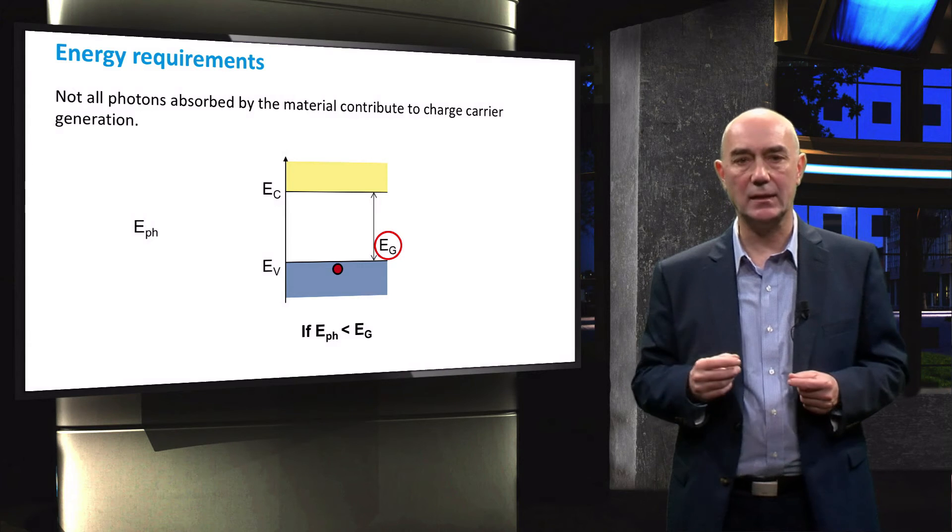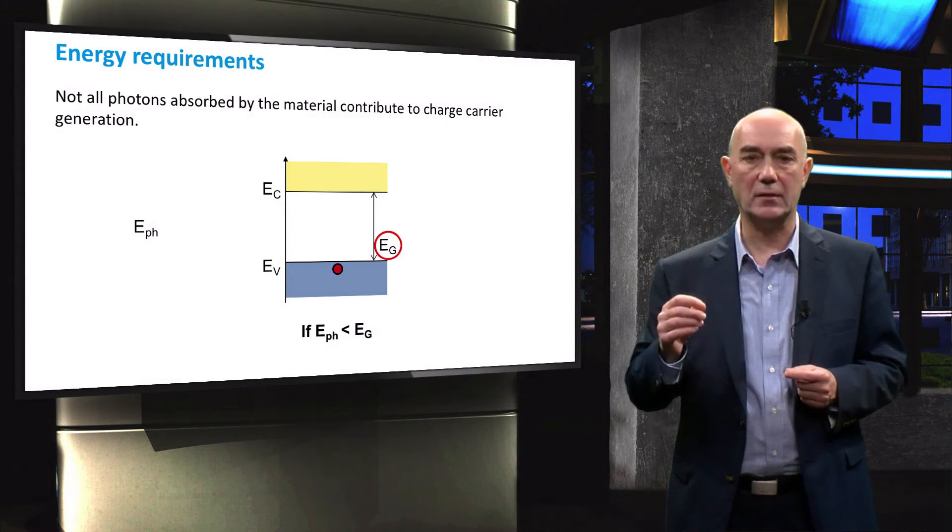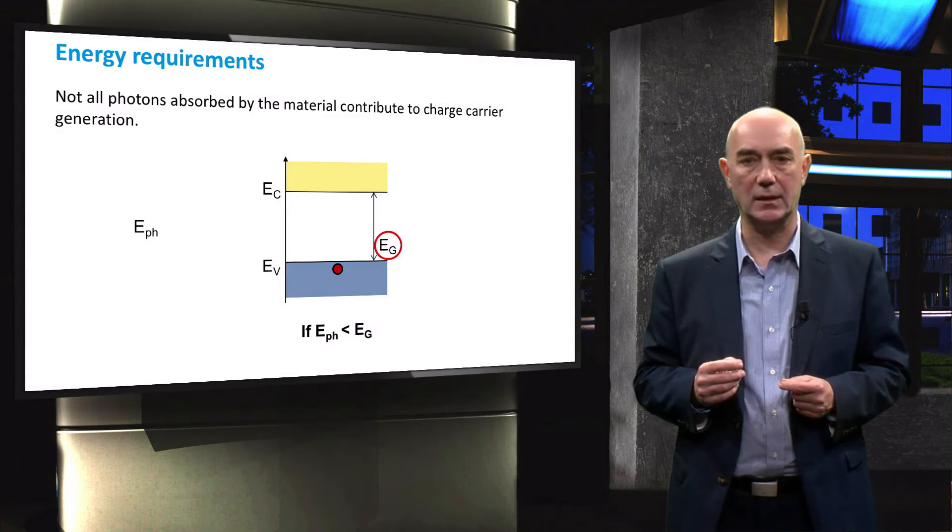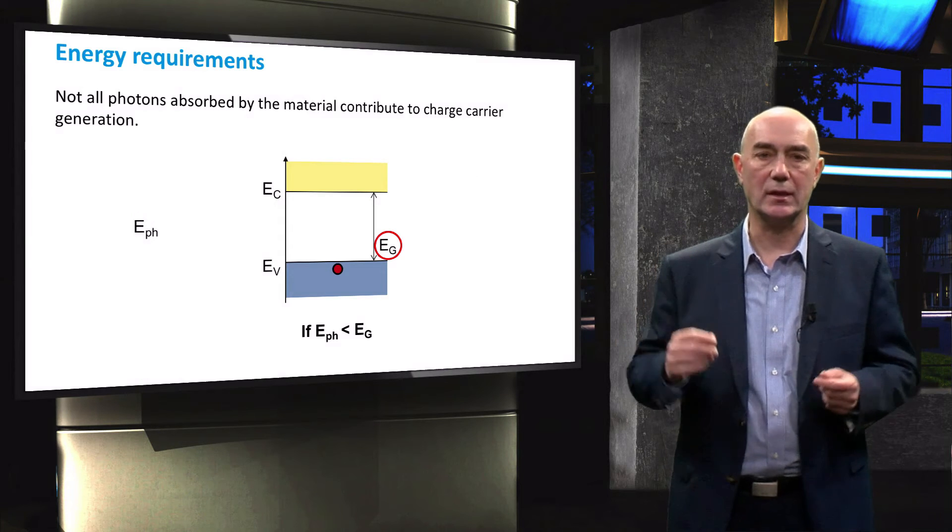Red photons have less energy than blue photons. In this example, the red photon's energy is less than that of the band gap, whereas the blue photon has energy larger than the band gap.